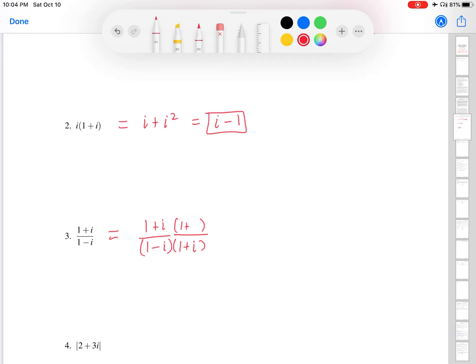So remember, that was the same complex number, except with the opposite sign imaginary part. So in this case, the imaginary part is negative 1. So the opposite sign of that is positive 1. So I multiply the entire fraction by 1 in this form, 1 plus i divided by 1 plus i.